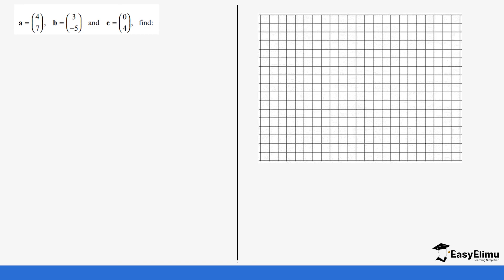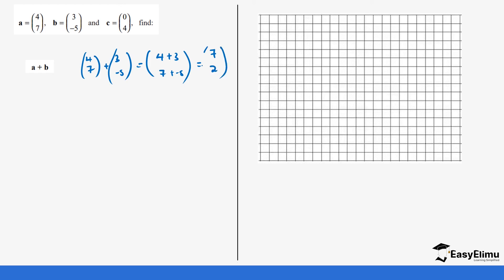Let's look at another example. We have a = (4, 7), b = (3, -5), c = (0, 4). Find a plus b: that is (4, 7) plus (3, -5), which equals four plus three and seven plus negative five. This gives us seven and two. On the plane we move seven steps on the x-axis — one through seven — then two steps upward on the y-axis. Our vector goes from the starting point to this final point.